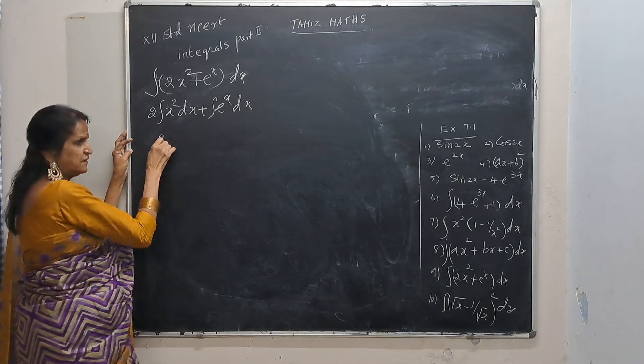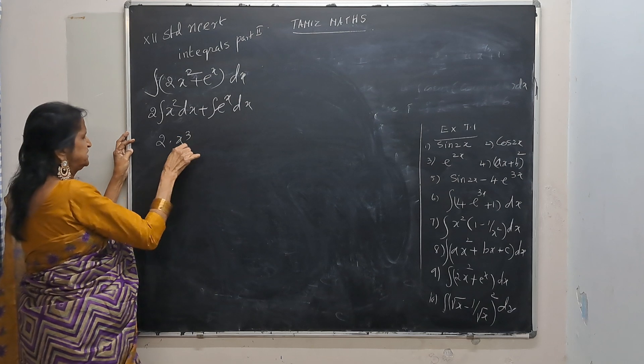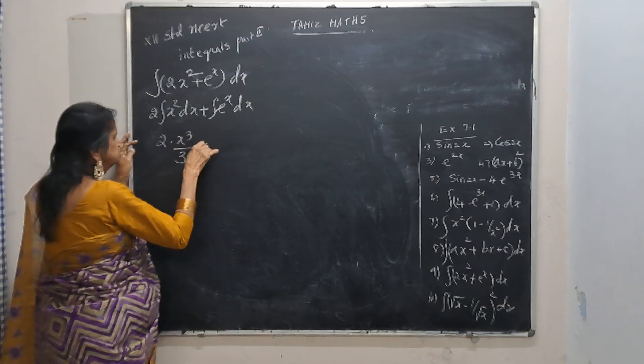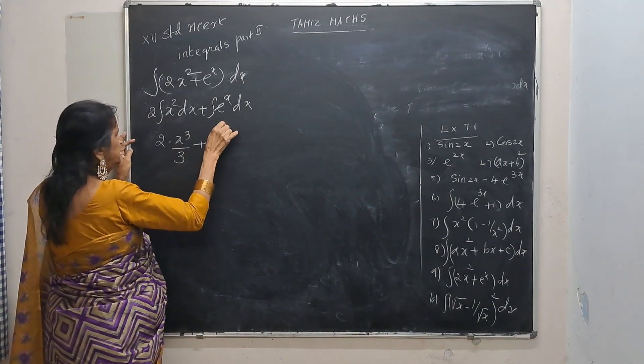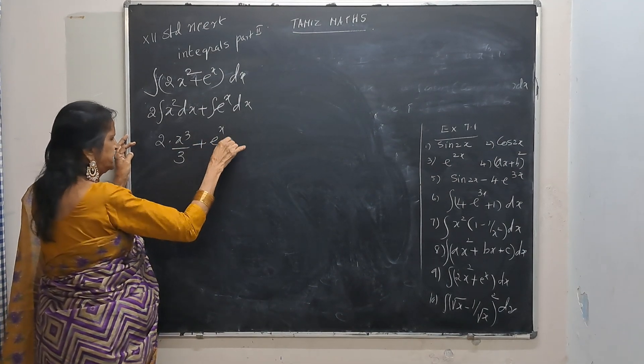So what we do is: 2 times x cubed by 3, plus integral of e to the power x, which is e to the power x, plus c.